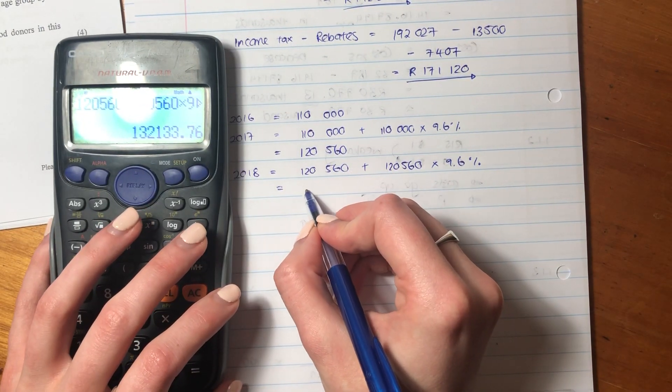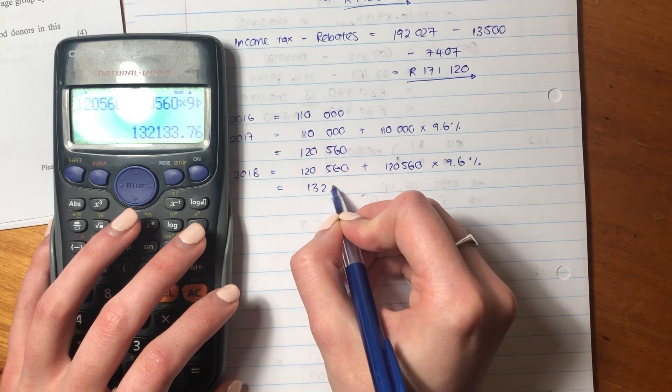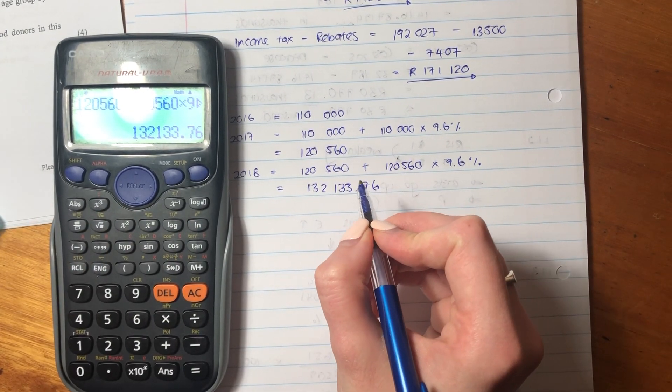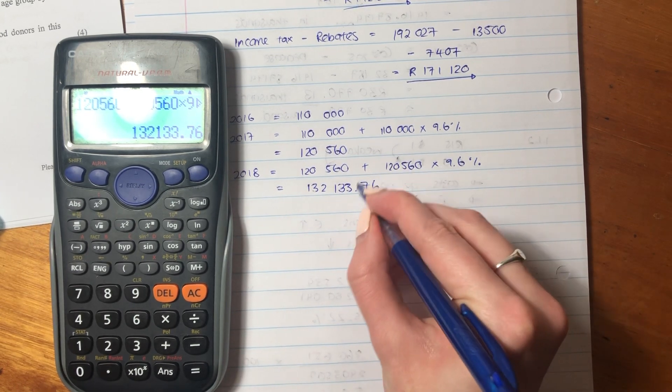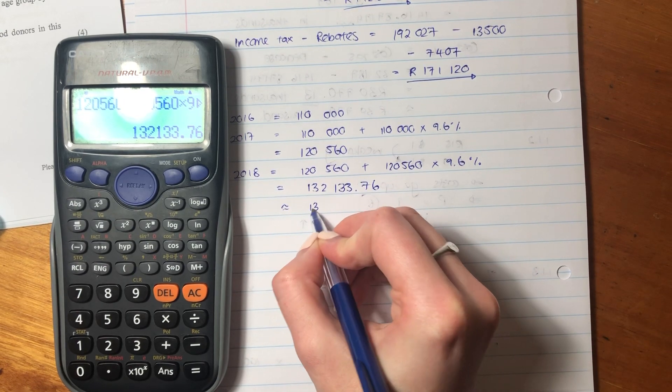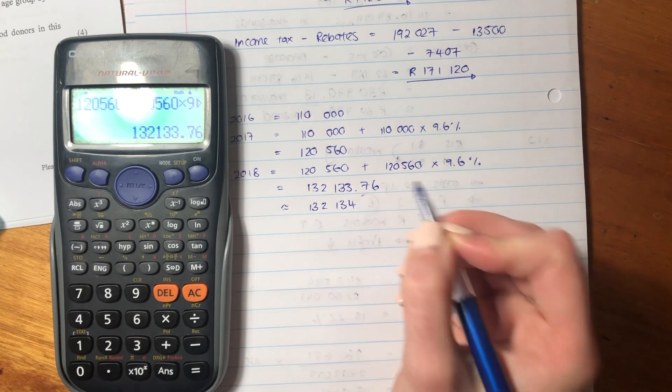And we see that we have 132,133.76, right? And we know that we can't have 0.76 of a human. So we're just going to round this off, okay? So that is our answer.